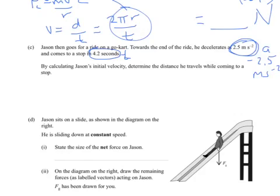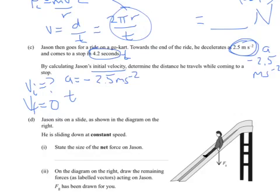That's our acceleration. So we would give it as negative 2.5 meters per second squared. By calculating Jason's initial velocity, determine the distance he travels for coming to a stop. So we have to calculate his initial velocity first. Vi. His final velocity, therefore, if he's coming to a stop, is zero. We've got his acceleration, which if we take the initial velocity as positive, that means his acceleration would be negative 2.5 meters per second squared. We've got the time of 4.2 seconds. So we could then use VF equals VI plus AT.